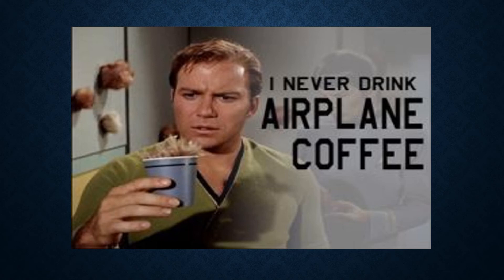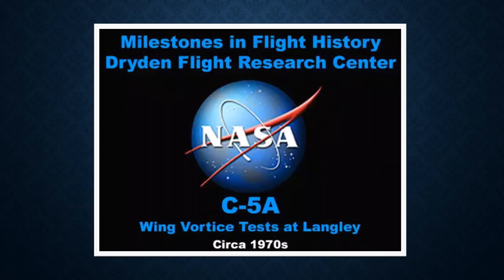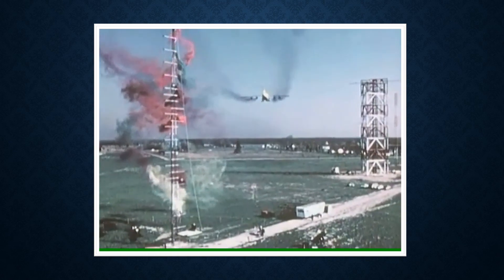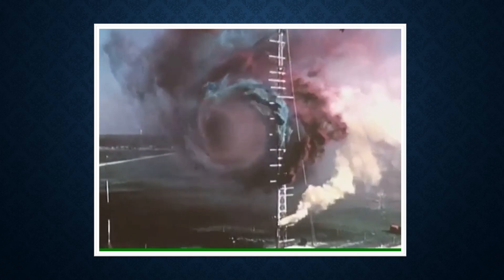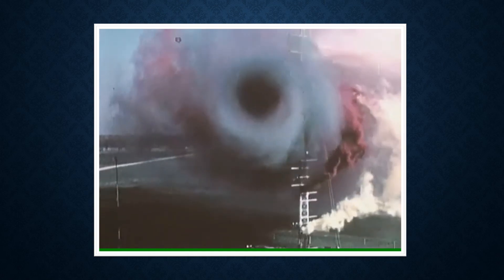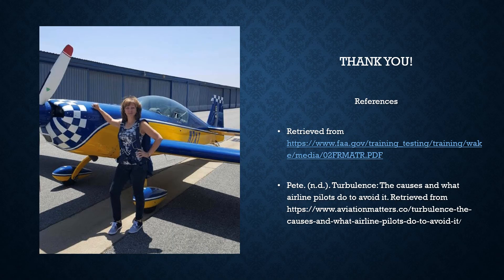The next time you hear the tower say, "Caution, wake turbulence," pilots should take a second to think through the steps to stay upright and in smooth air. This NASA research video is a great example of the strength of wing tip vortices, which have been known to sweep a small aircraft off a runway if they are not paying attention. Thank you, classmates, for attending the safety workshop on wake turbulence. Fly safe and have a great day.